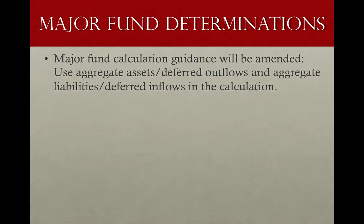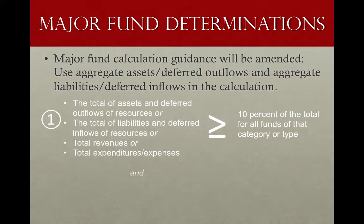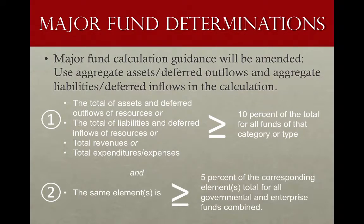Statement 65 also affects the determination of which governmental and enterprise funds are required to be reported as major under GASB Statement 34 and therefore reported on the face of the financial statements in their own column. Under Statement 34, a governmental fund is required to be reported as major if the total of its assets, liabilities, revenues, or expenditures are greater than or equal to 10% of the total for all funds of that category or type, and that same element is greater than or equal to 5% of the total for all governmental and enterprise funds combined.